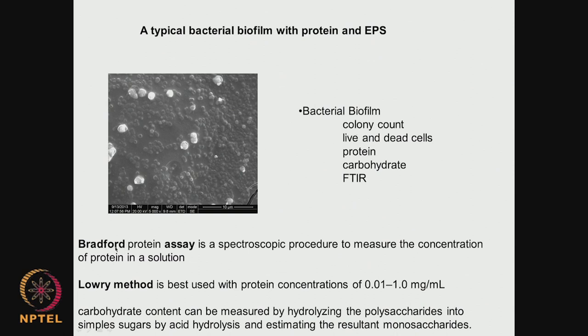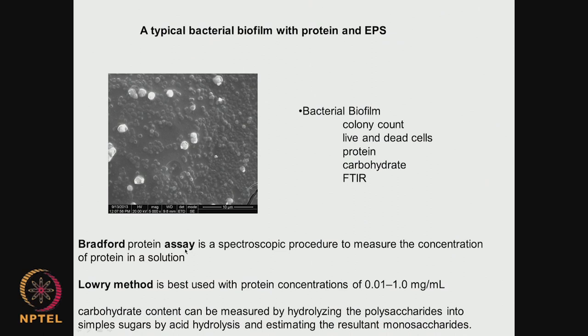How do you measure protein and carbohydrate? There is something called the Bradford method to determine the amount of protein present. It does not differentiate between type of protein or molecular weight — it tells you how much protein is present. It is a spectroscopic procedure and it gives you the concentration of the protein in a solution. We can scrape the biofilm from the material, take it into solution, and using the Bradford method find the protein concentration. There is another method called Lowry's method, which is good if the protein concentration is very low — it is quite accurate in that case, whereas Bradford works at higher concentrations.